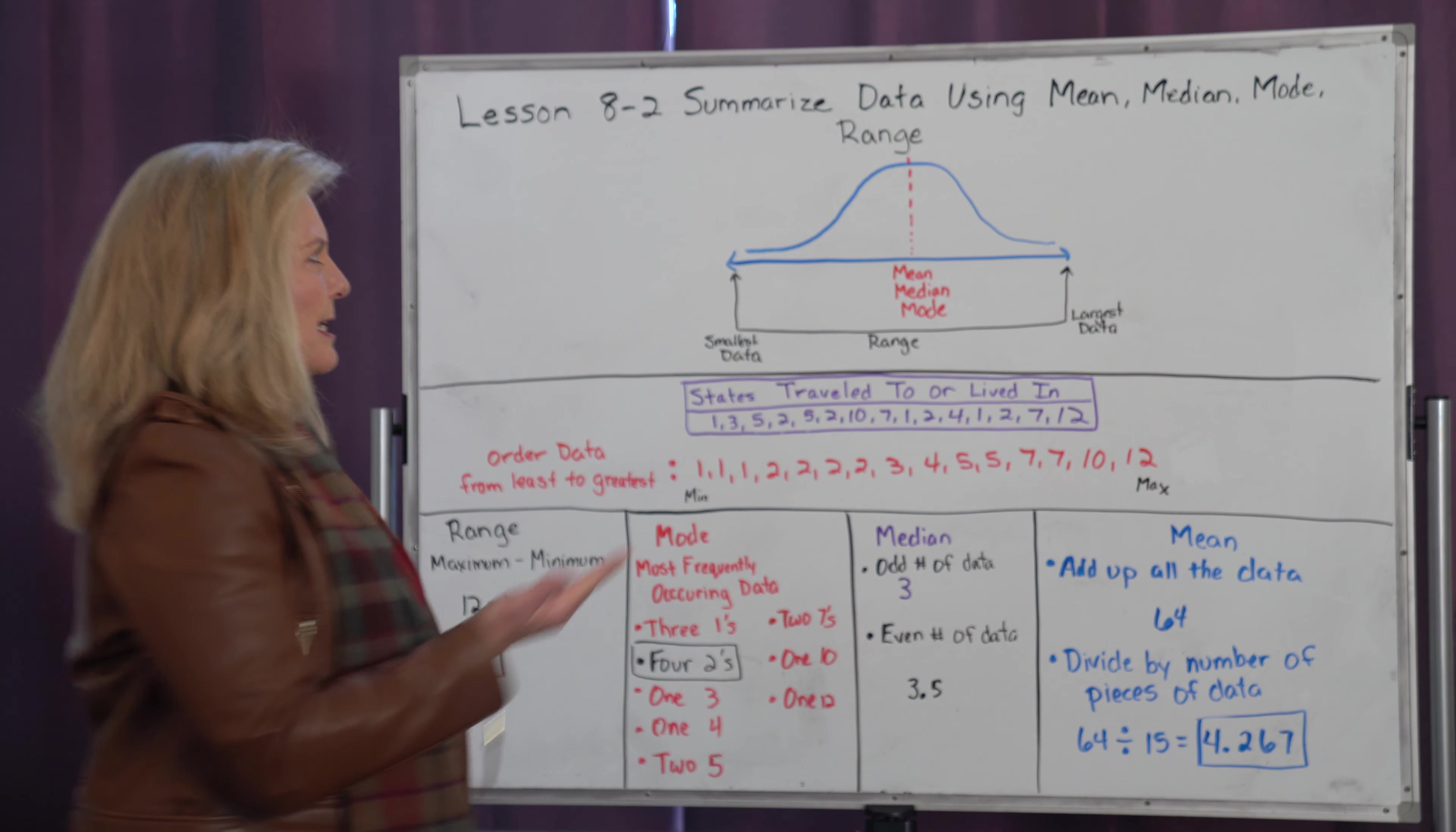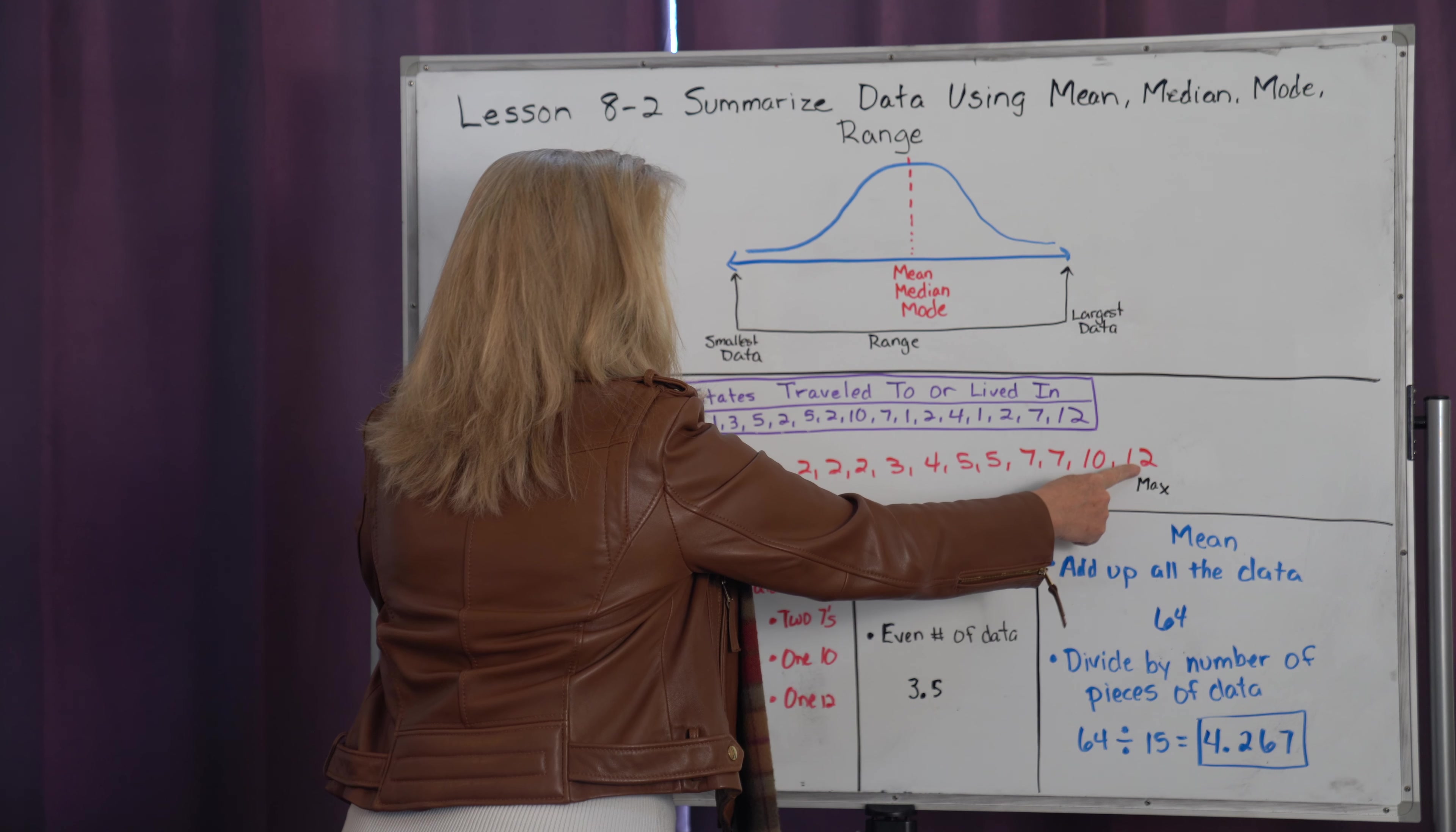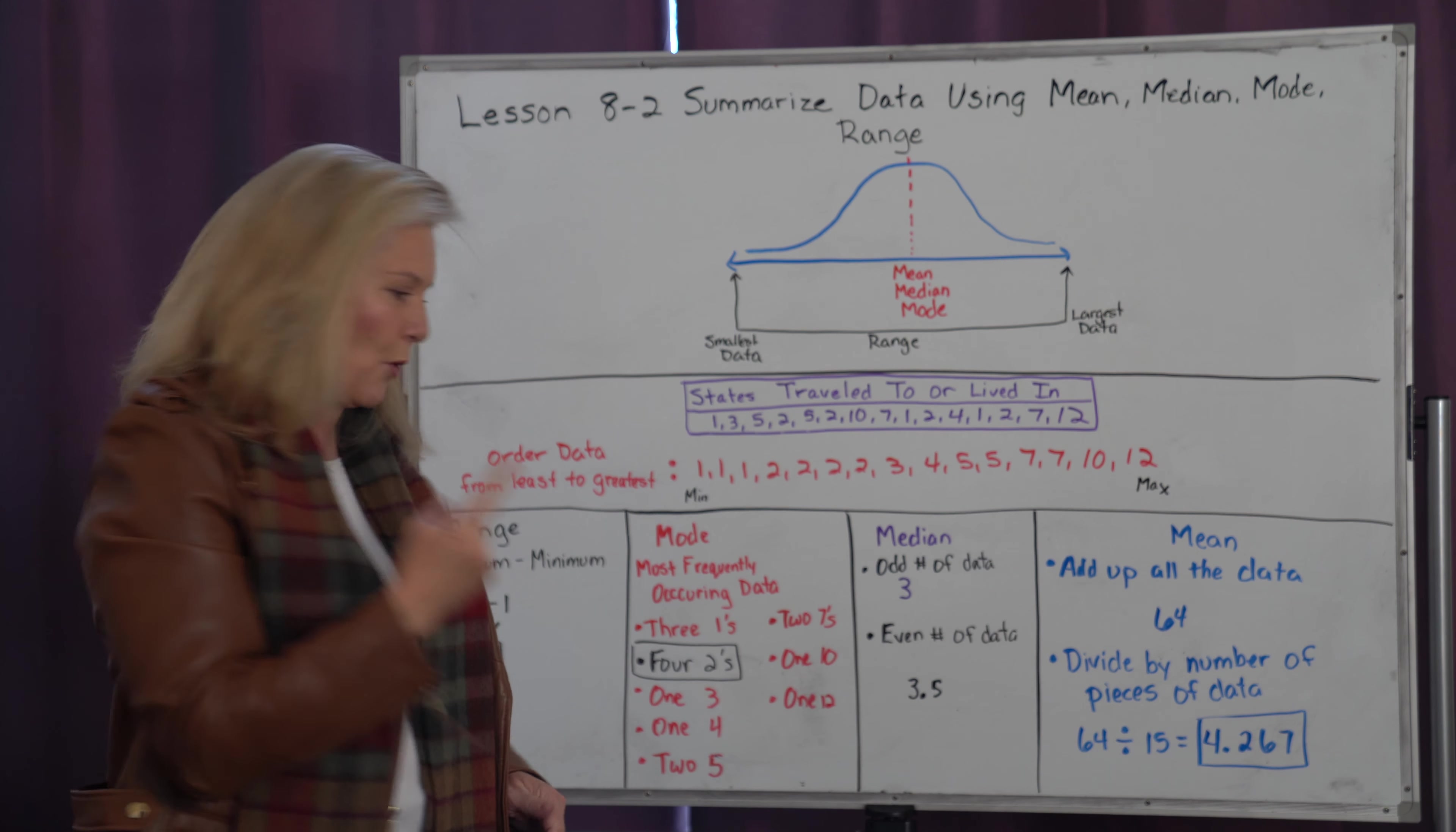Now we're going to look at the median, and the median really is that exact center point of that data set. If I have this ordered, and it's key for median that you have to have your data set ordered, all I need to do is count my way into the center. I usually just use my fingers and go to the smallest and the largest, and then keep moving my way in until I'm exactly in the center of that piece of data. When I get to the center, it's at three, which means on this curve my three would be right there.